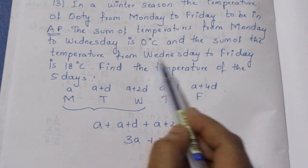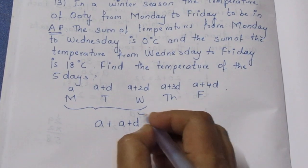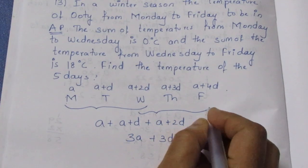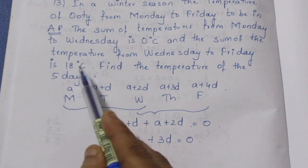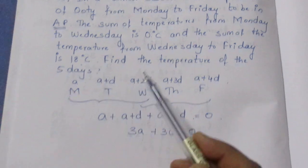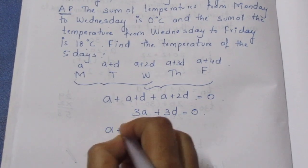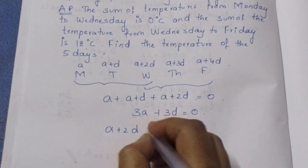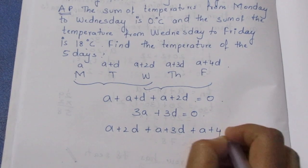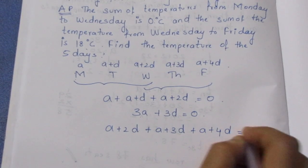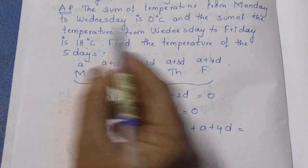Next, the sum of the temperatures from Wednesday to Friday. So Wednesday, Thursday, Friday — when we add those three terms, it is said to be 18 degrees. That gives us: (a+2d) plus (a+3d) plus (a+4d) equals 18 degrees.